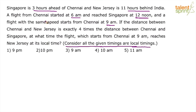So if it is 6 am in India, Singapore will be 9 am. If it is 4 pm in India, Singapore will be 7 pm — they are 3 hours ahead, so 4 pm plus 3 hours is 7 pm. New Jersey is 11 hours behind India, meaning if it is 6 am in India, New Jersey is 6 am minus 11 hours, which gives 7 pm.